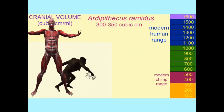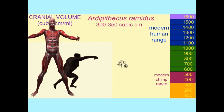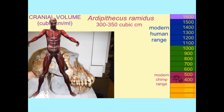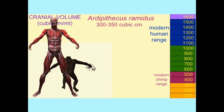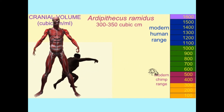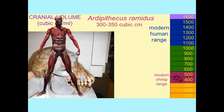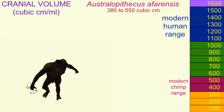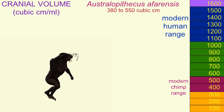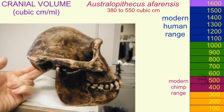This size increase occurred gradually. In these animations, fossil hominins throw their skulls against the wall, and one can see the volume of their cranial cavity based on where it falls on the scale. The earliest hominins had a cranial volume not only within chimp range, but at the lower end of chimp range. The australopithecines had a cranial volume within chimp range, but at the upper end, perhaps slightly higher than that of a modern chimp.